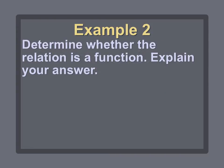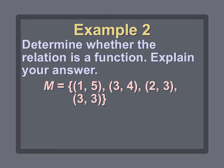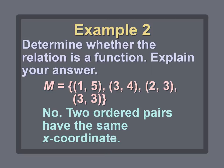Let's look at relation M with ordered pairs (1,5), (3,4), (2,3), and (3,3). Is it a function? We check: does every X value appear only once? The first ordered pair has X=1 — no other pair has X=1, so that's okay. The next has X=3, and the last ordered pair (3,3) also has X=3. We've got two ordered pairs with the same X coordinate, so the answer is no — relation M is not a function.